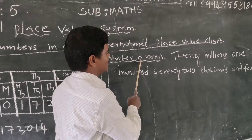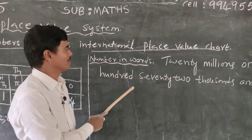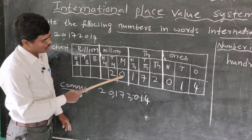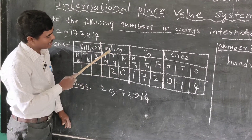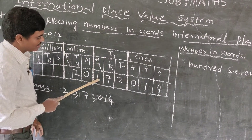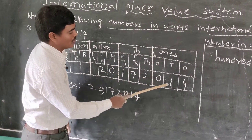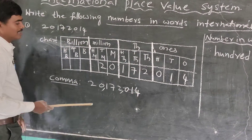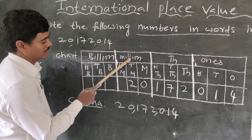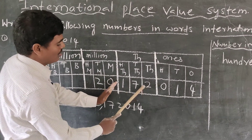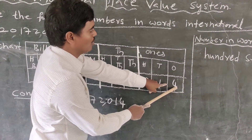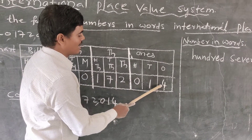Now write the number in words, also called the number name. First, read the digits in the millions period: twenty. Which period? Twenty millions. Next, the thousands period: 172. So 172 thousands. And finally the ones period: 14.